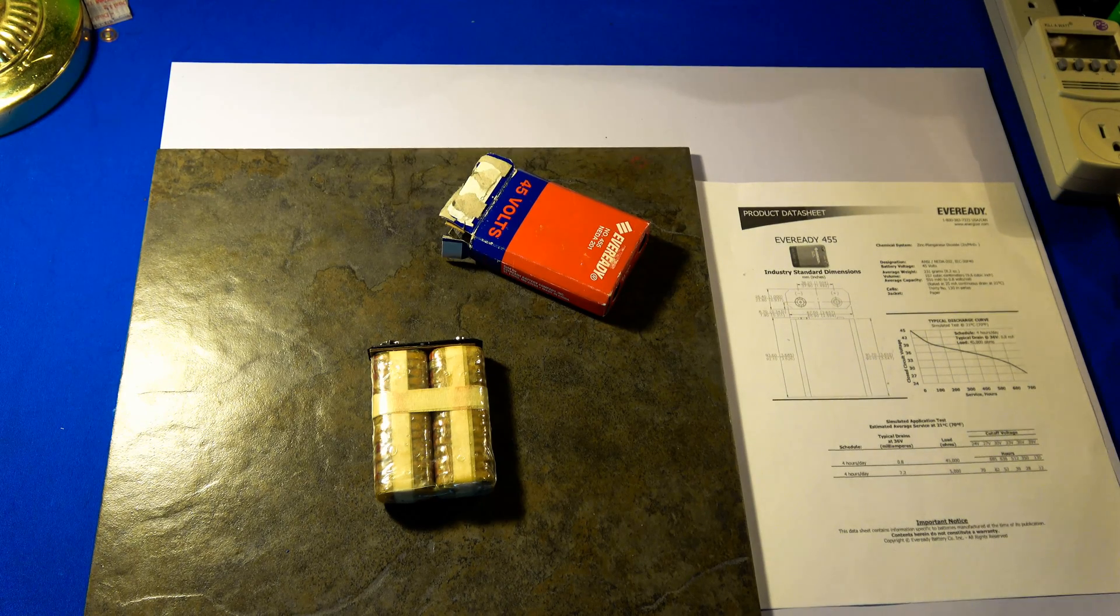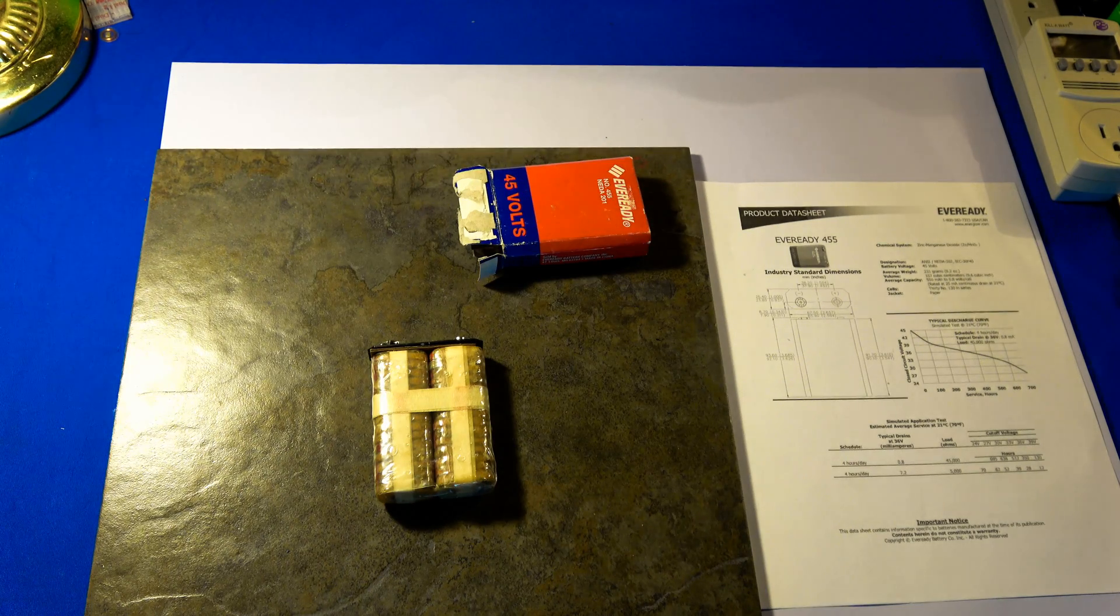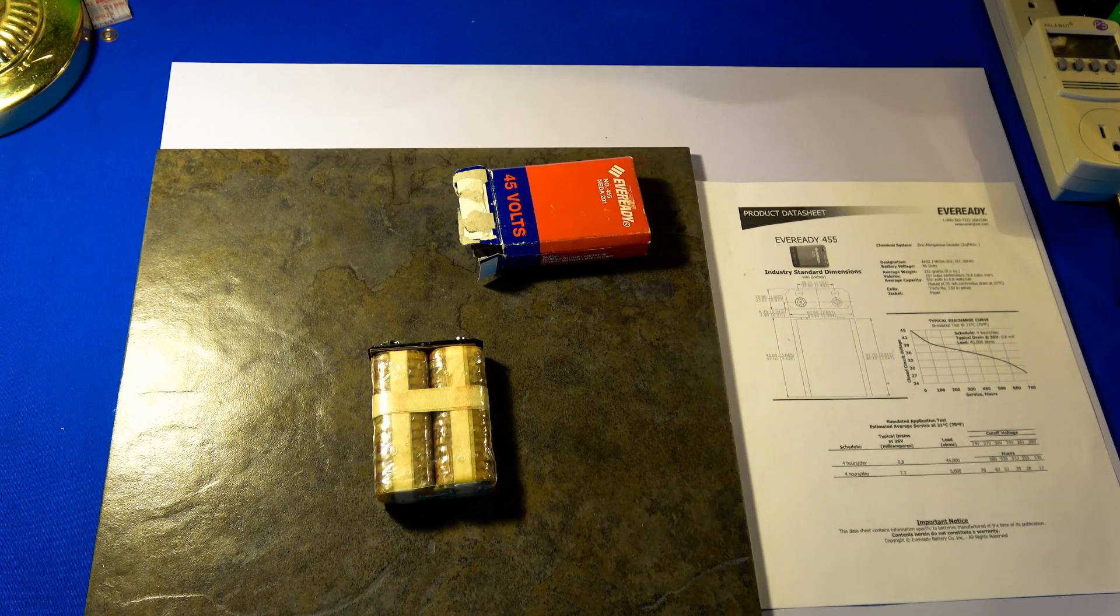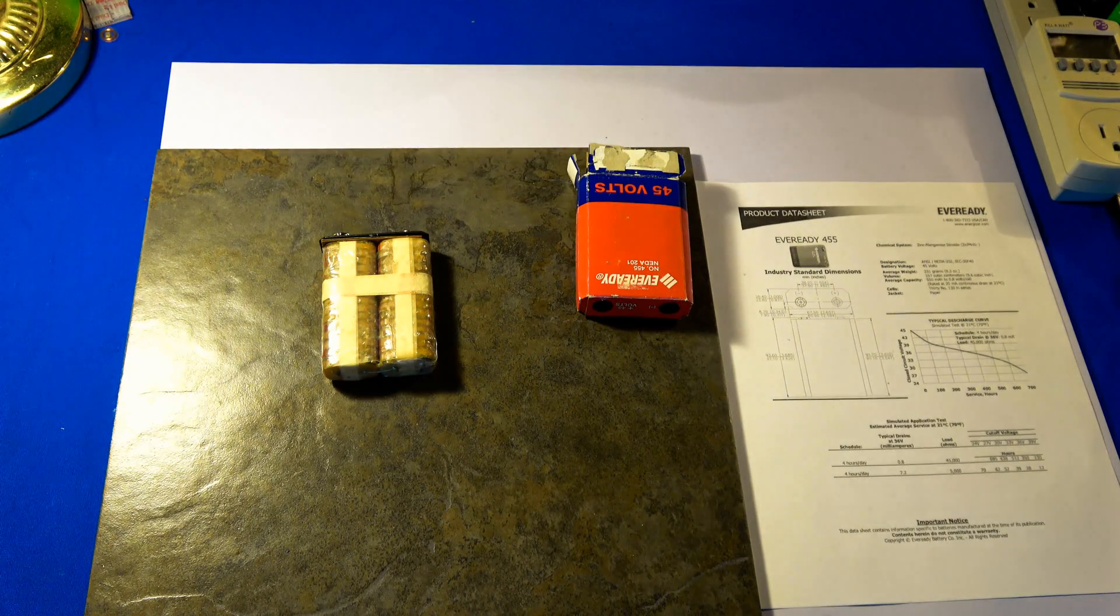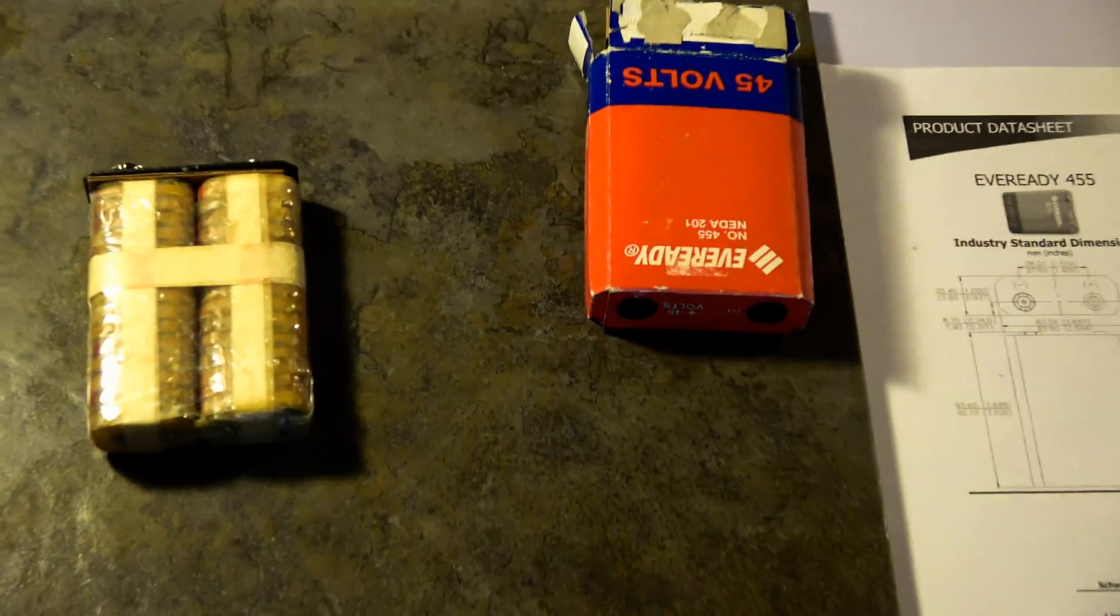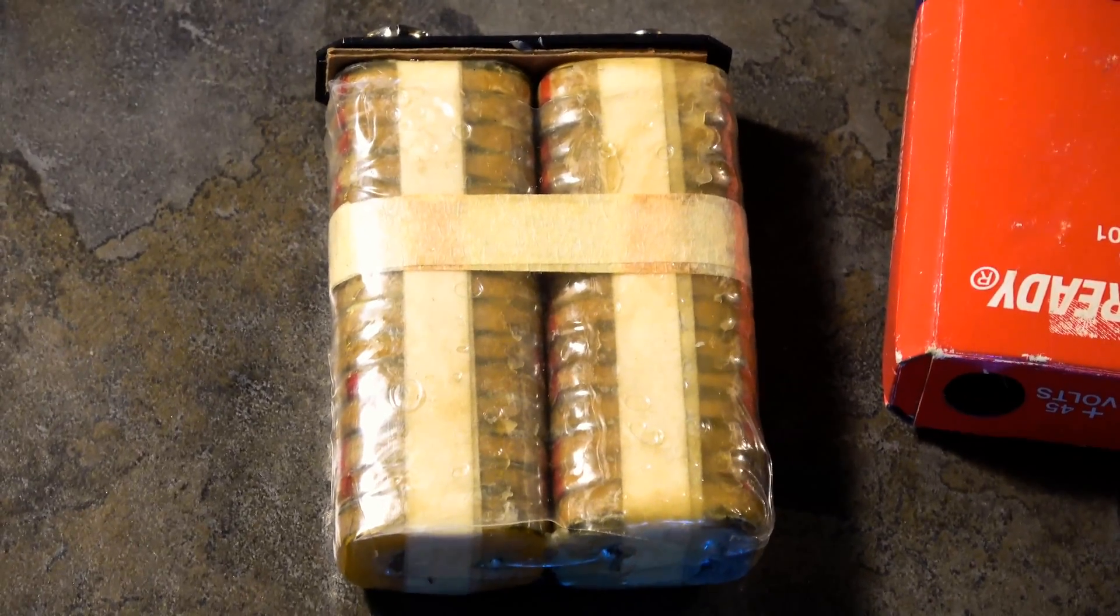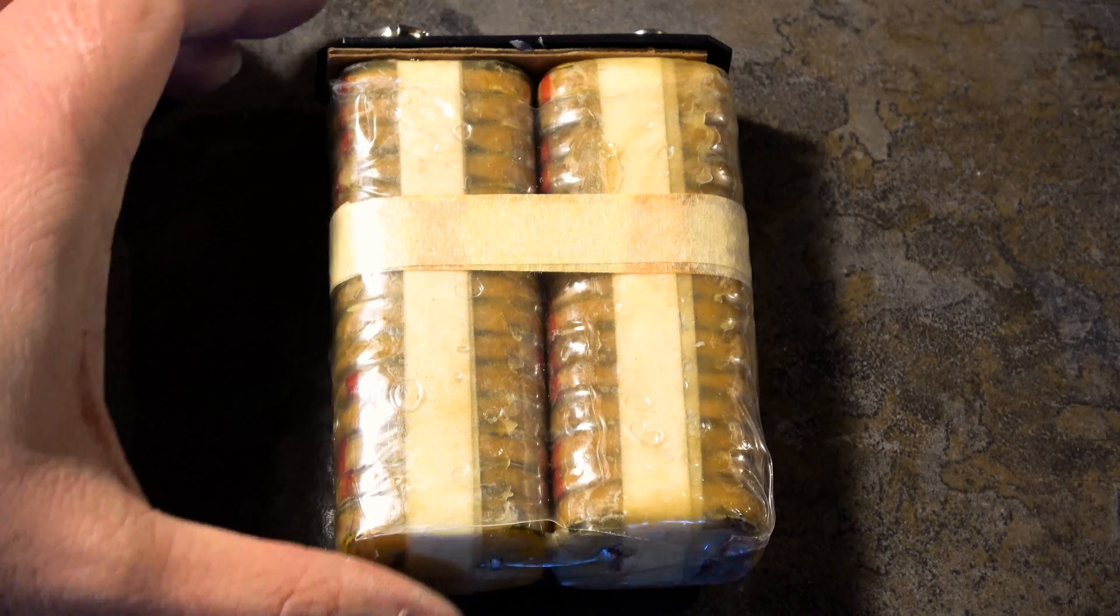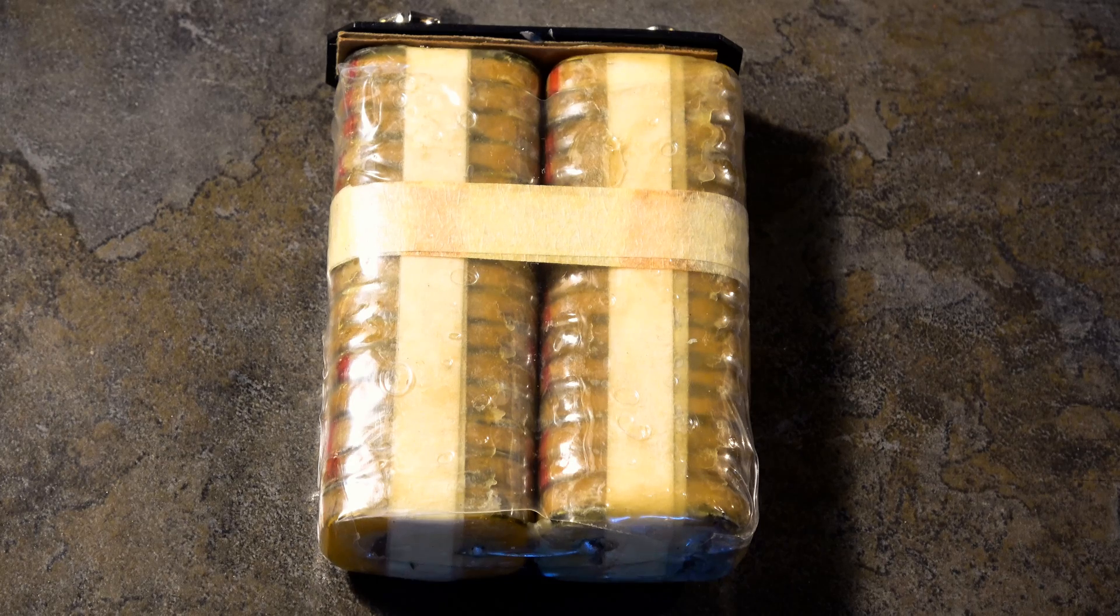Of course, alkaline batteries have a full voltage of approximately 1.5 volts per cell. And we're going to zoom in on the battery now. At 1.5 volts per cell to get to the nominal of 45 volts, and it says 30 cells.